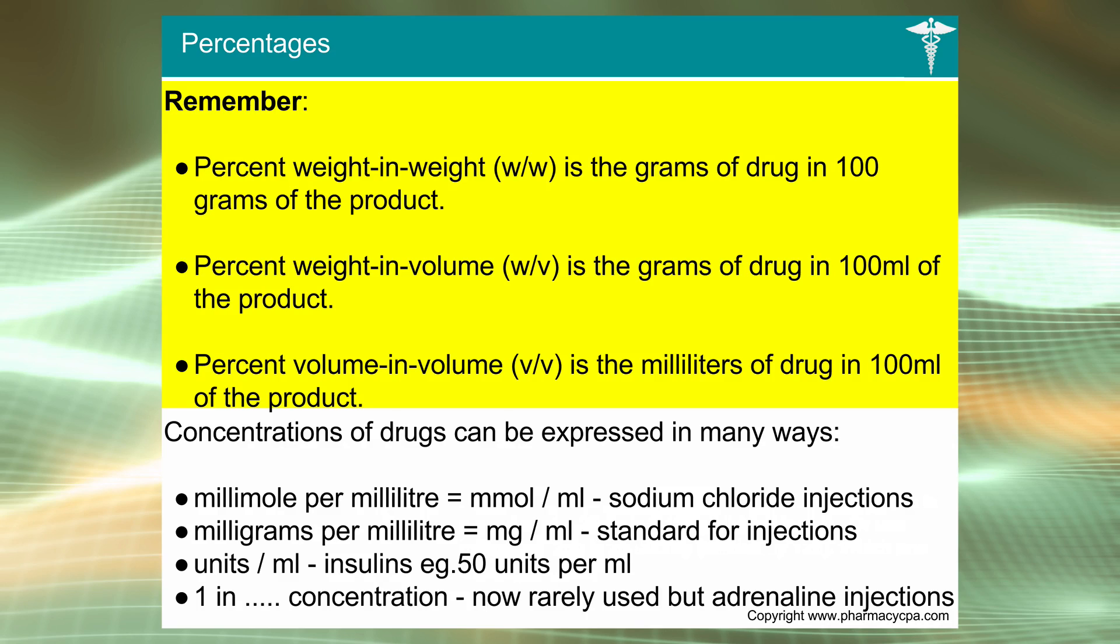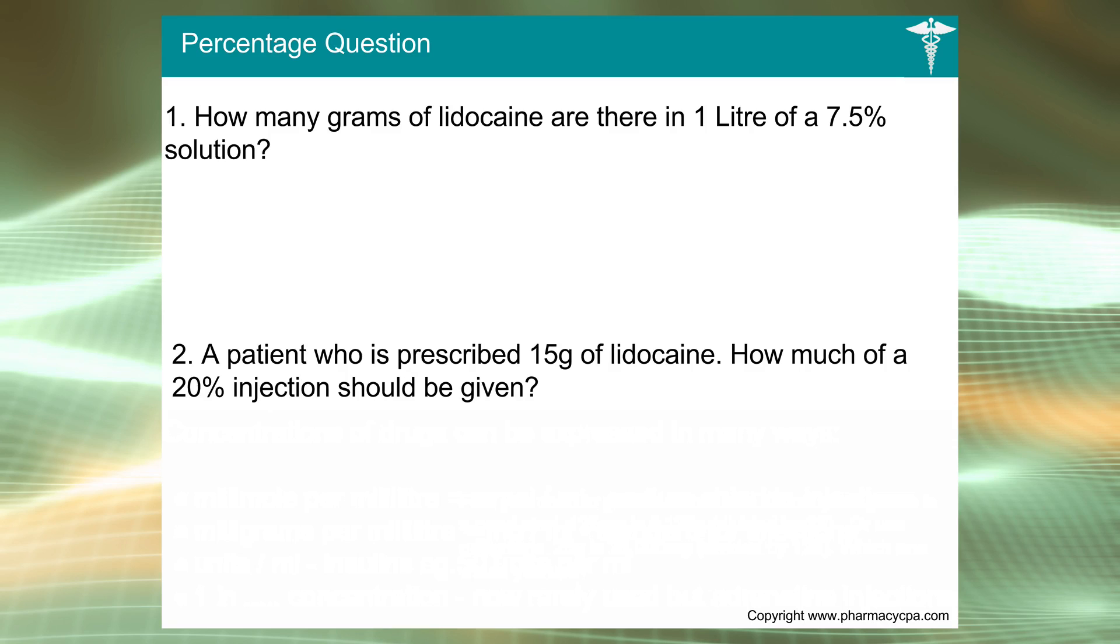How much is 62 percent of 450? It's going to be a bit more than half, so 225. You could say around about 240, so 279. What percentage is 125 milligrams out of 25 grams? You can see the units don't match, so you probably convert 25 grams into milligrams, which would be 25,000. Percentages weight in weight is grams of drug in 100 grams of the product. Percent weight in volume is grams of drug in 100 mils of product. Percentage volume is the millimeters. It's pretty straightforward stuff, guys.